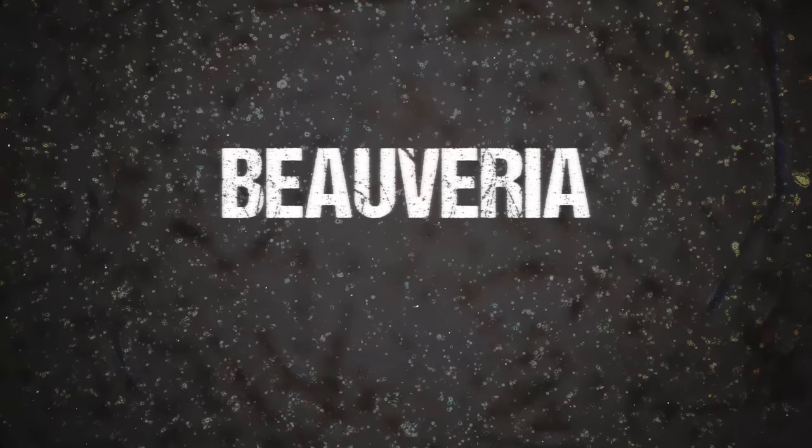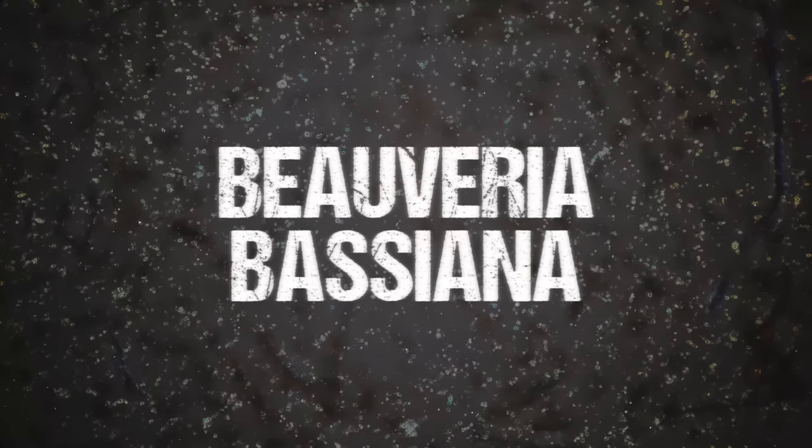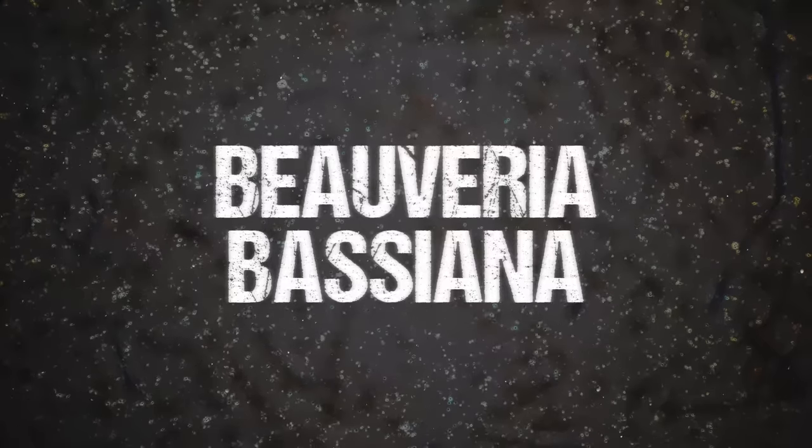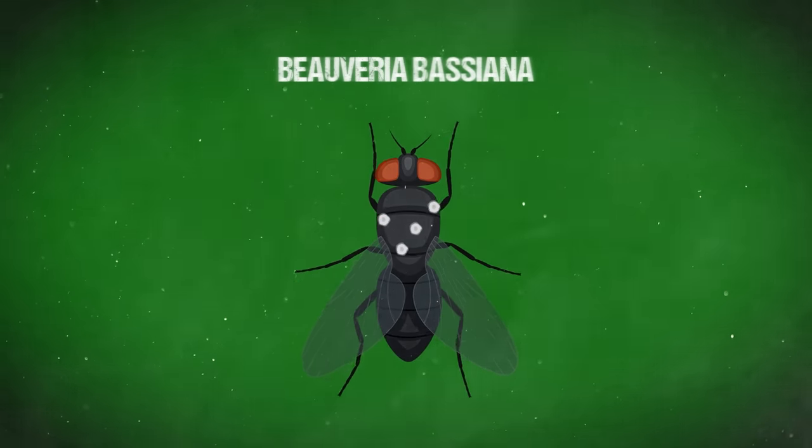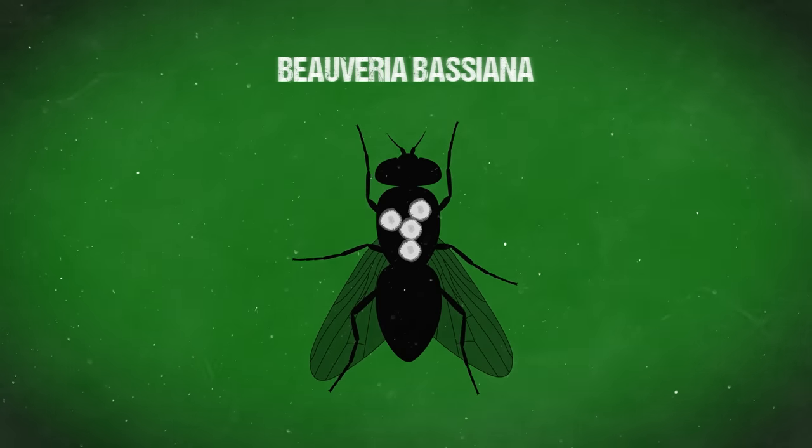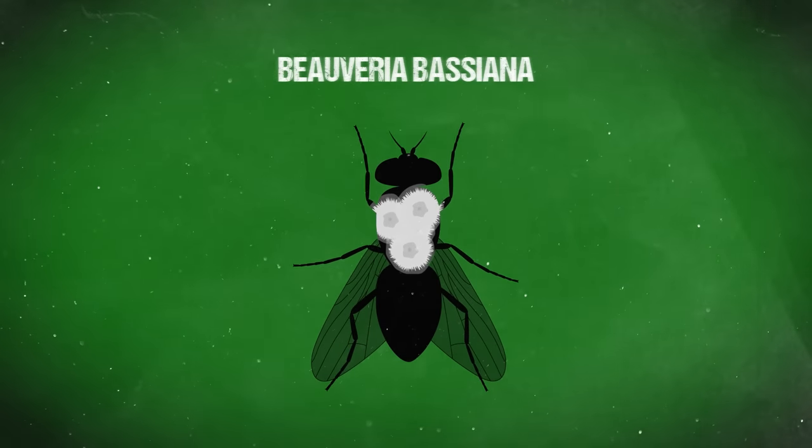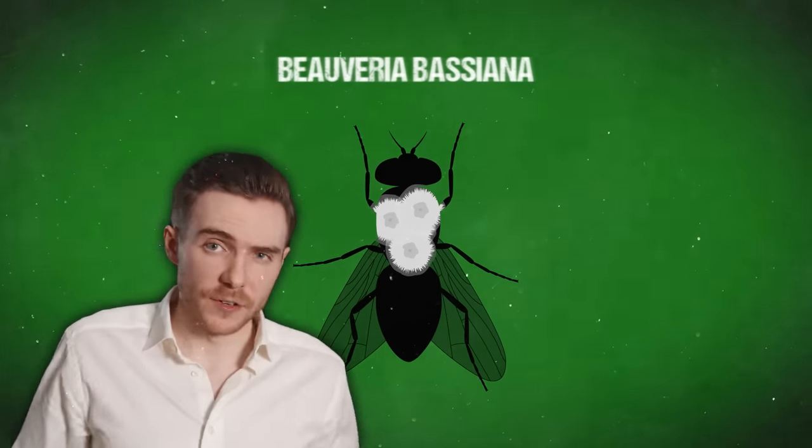One such fungus is Beauveria bassiana that can be found growing in soils all over the world. It infects insects and other arthropods by penetrating their exoskeletons and growing inside them, killing them within a few days.